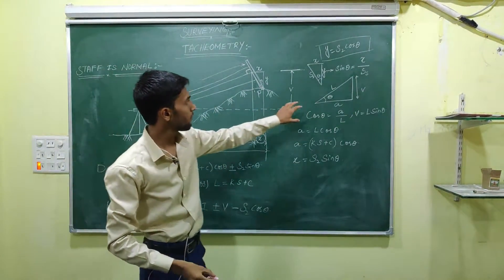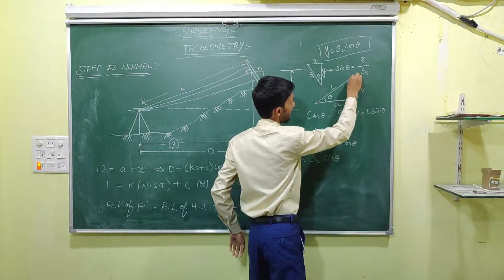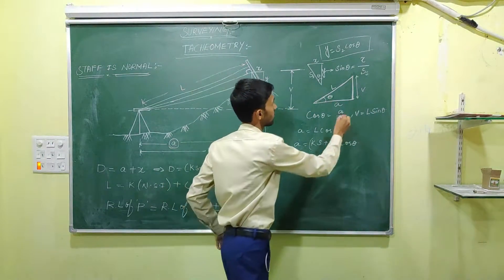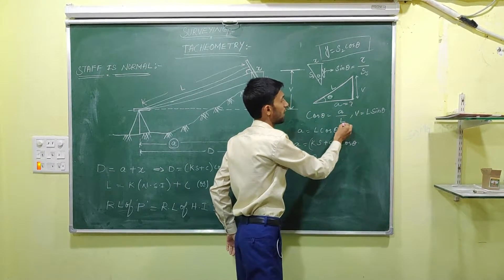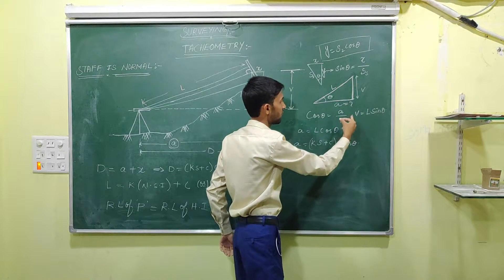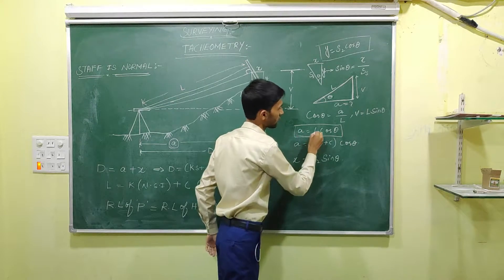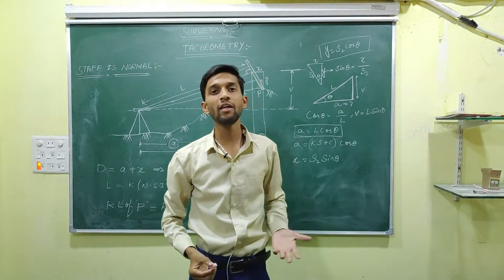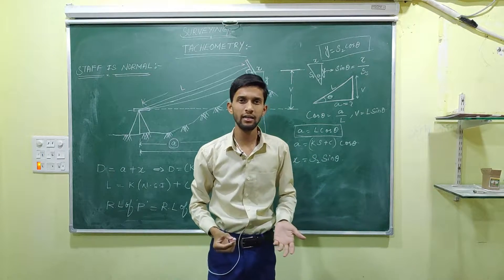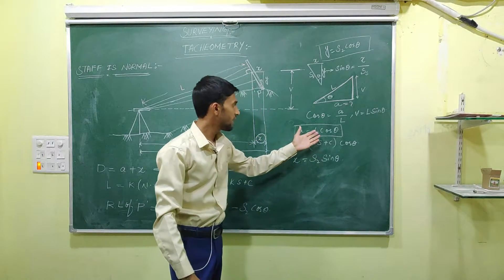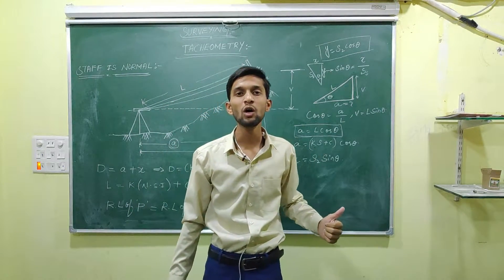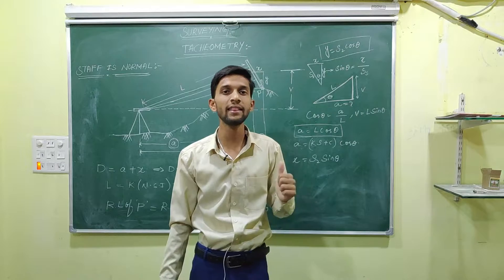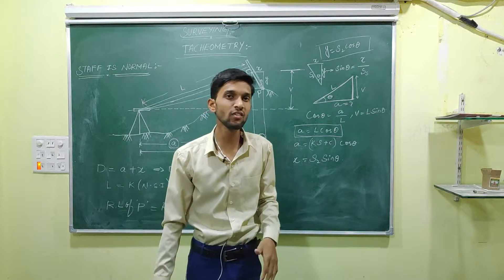For calculating horizontal distance A, I have taken a triangle. From this triangle: cos θ = A / L, that is adjacent over hypotenuse. So A = L cos θ, where L is the length of line of sight. In previous videos we derived L = KS + C, where S was S cos θ because the stop was vertical. But in this video the stop is normal.